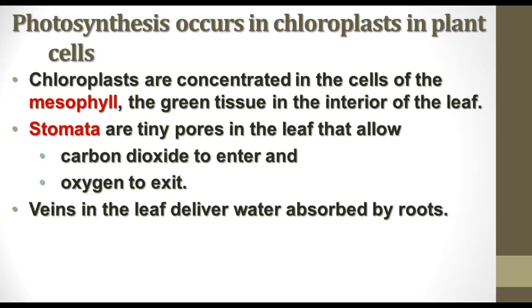Leaves have a number of different structures. One important structure is the stomata — tiny pores in the leaf that allow carbon dioxide to enter and oxygen and water vapor to exit. There are also veins in the leaf that deliver water absorbed by the roots and carry away the food that is made in the mesophyll.